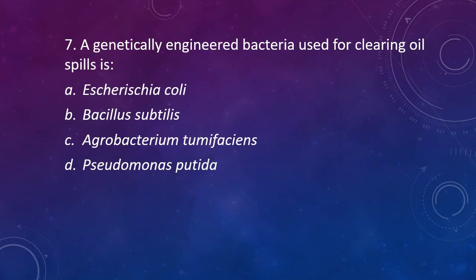Question 7: A genetically engineered bacteria used for clearing oil spills is? Option A: Escherichia coli. Option B: Bacillus subtilis. Option C: Agrobacterium tumefaciens. Option D: Pseudomonas putida. The correct answer is Option D — Pseudomonas putida has the function of clearing oil spills and it is a genetically engineered bacteria.